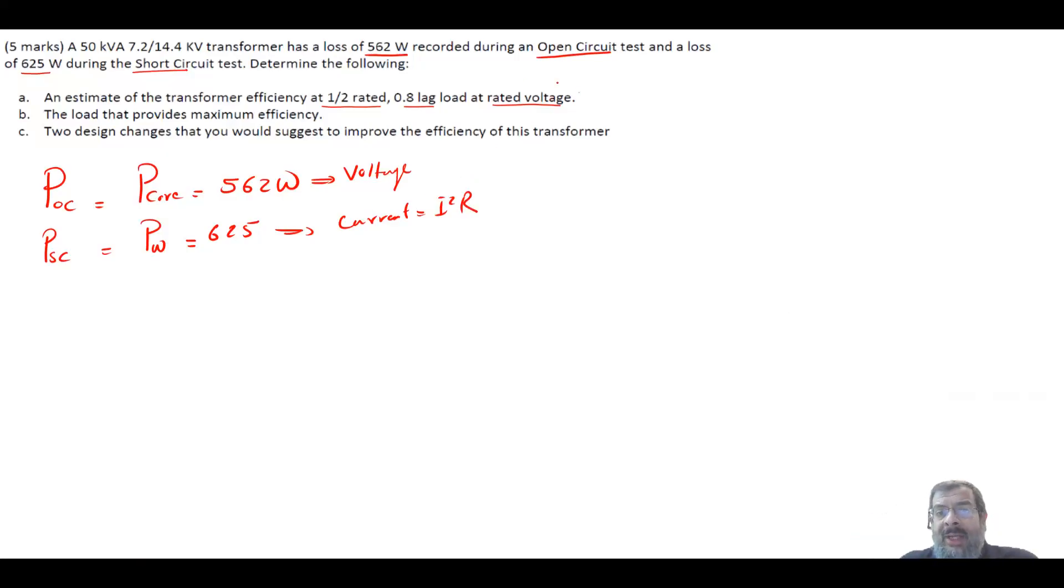Okay, now when we say that the transformer is at rated voltage, it means that the core loss is constant, doesn't change. So in part A, your Pcore is equal to 562 Watt. Half the load, 20% of the load, 100%, it doesn't really matter. As far as the voltage is constant. So at 50% of the load, this is your core losses.